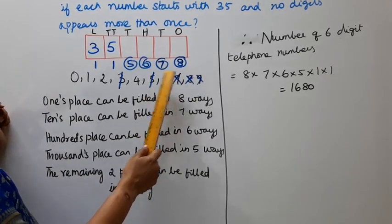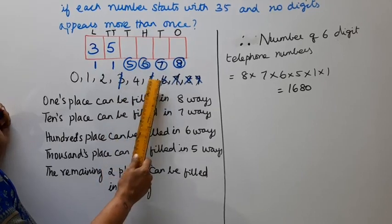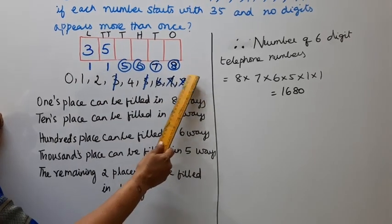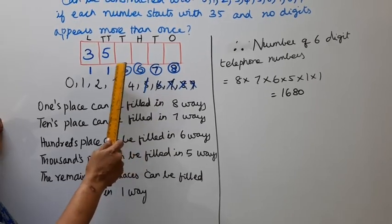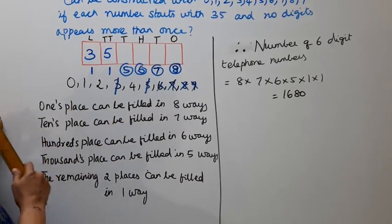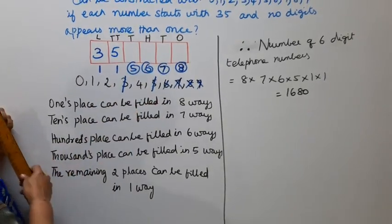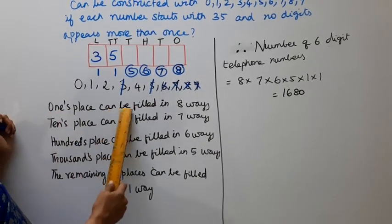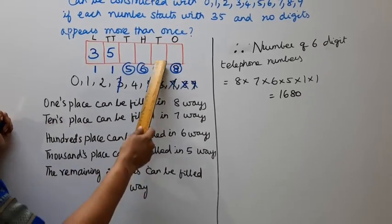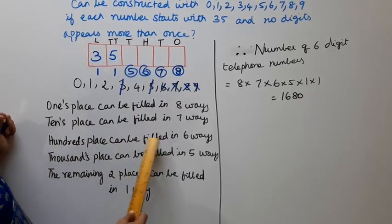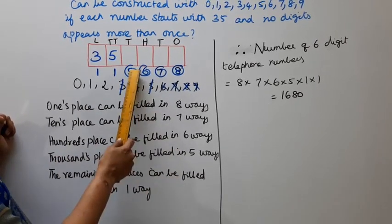So: position 3 can be filled in 7 ways, position 4 (10th place) can be filled in 7 ways, the 100th place can be filled in 6 ways, and the 1000th place can be filled in 5 ways. The total number of telephone numbers is 1 × 1 × 7 × 6 × 5.